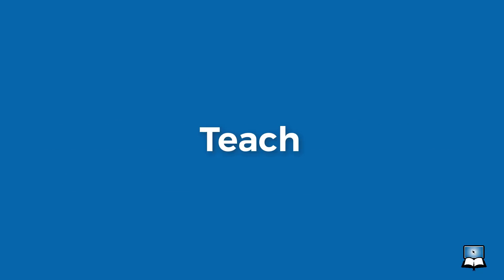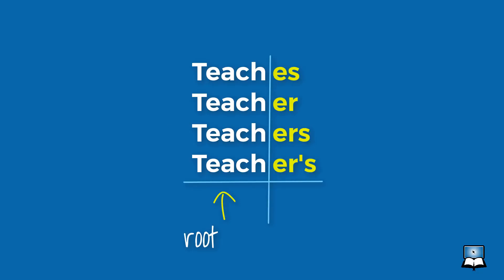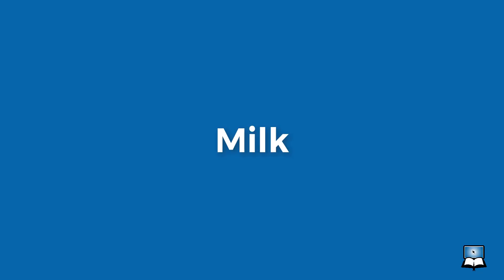We may alter the root form "teach" by changing the ending to "teaches," "teacher," "teachers," or "teachers'" with an apostrophe. Each addition is a change in form of the word and would be considered an inflection, and each inflection changes how that root word "teach" should be understood. However, it doesn't always work that way in the English language. Take the word "milk" — by looking at it, there is no way to know whether it is a noun or a verb, nor how it should be used in a sentence.